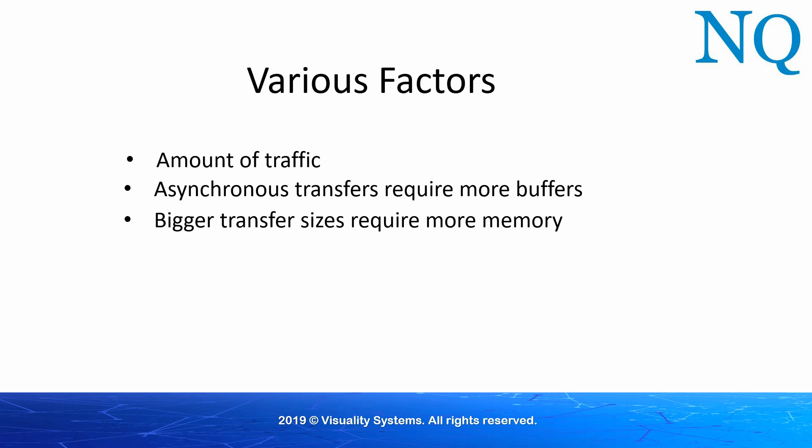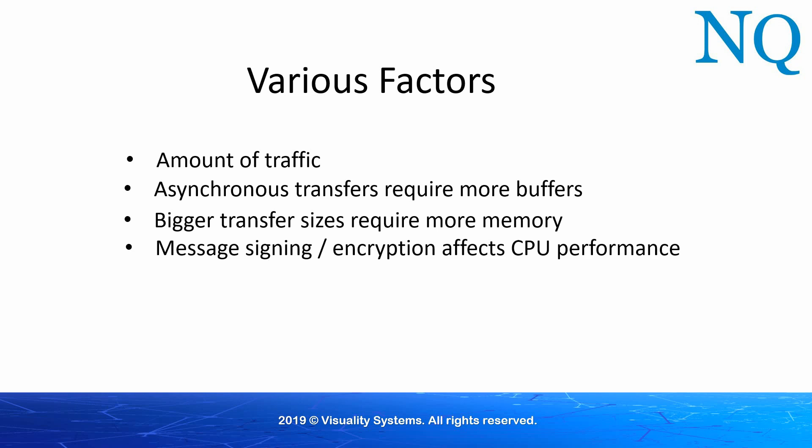As one can see, performance is always a compromise between SMB capabilities and resource availability. When message signing or encryption is involved, the CPU will likely be overloaded and this may affect performance.